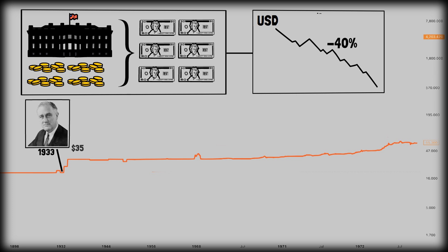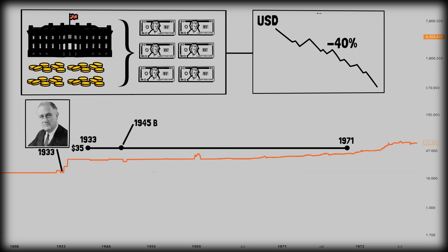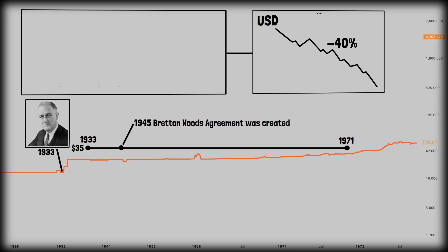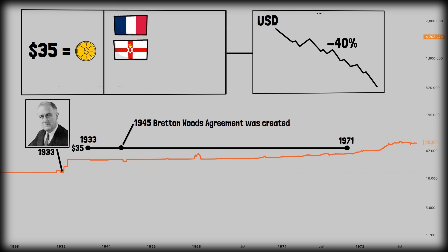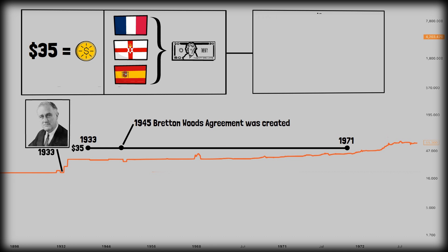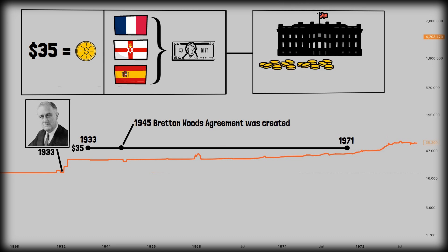Gold was at $35 per ounce from 1933 all the way until 1971. After World War II, the Bretton Woods Agreement was created, which meant the US dollar was pegged to gold at $35 per ounce and other countries fixed their currencies to the US dollar. Essentially, other countries — especially in Europe — sent most of their gold to the United States in exchange for dollars.